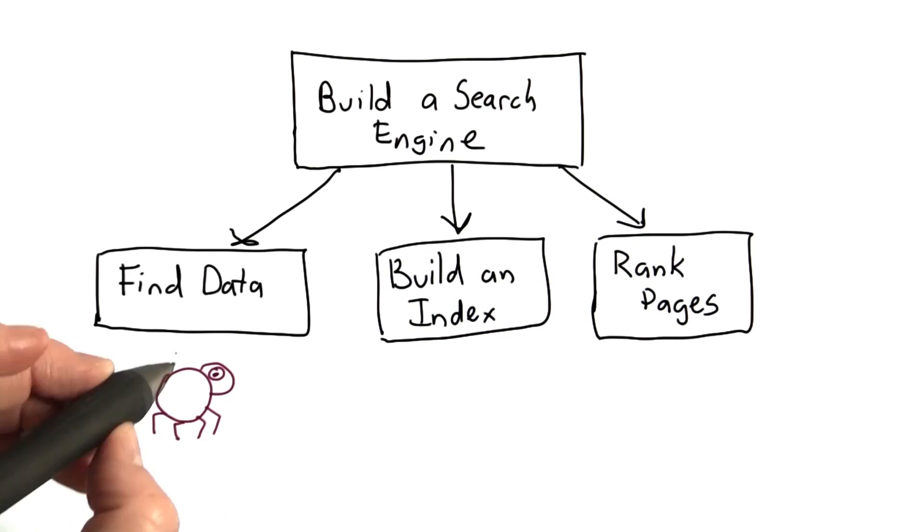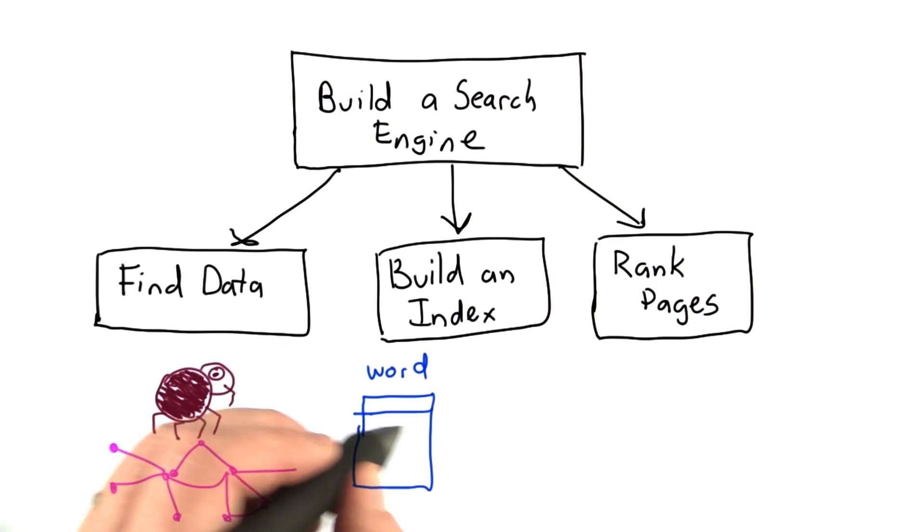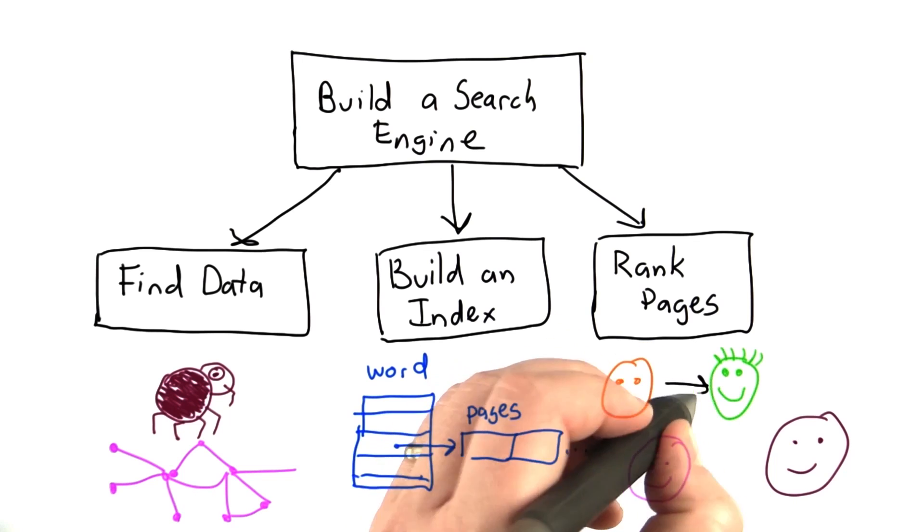For our search engine, the three main pieces are finding data by crawling web pages, building an index to be able to respond quickly to search queries, and ranking pages so we get the best result for a given query.